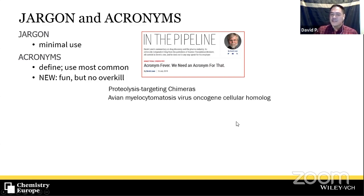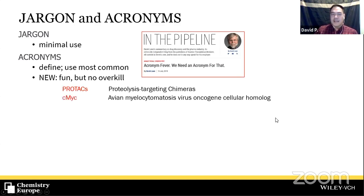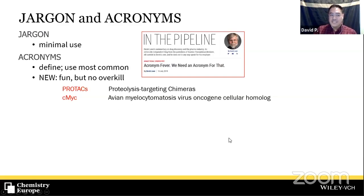Sometimes creating new acronyms works. For instance, 'proteolysis targeting chimeras' became PROTAC — that rings a bell and is familiar. And CMYC — we probably don't use 'avian myelocyte thomasis virus oncogene cellular homologue' anymore. PROTAC was invented as an acronym that became popular; that's one of the more successful ones.